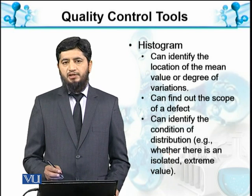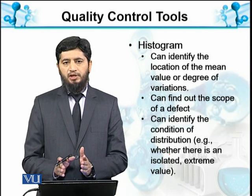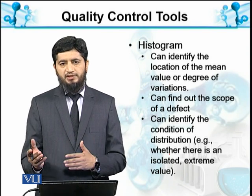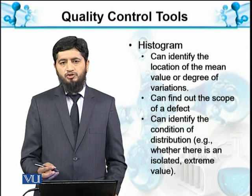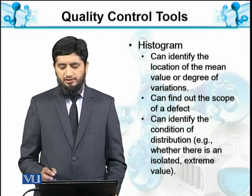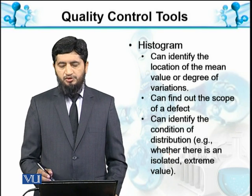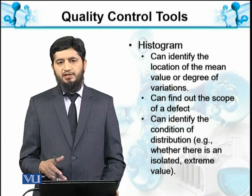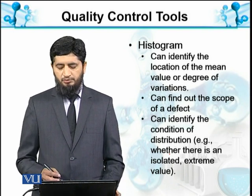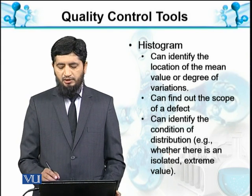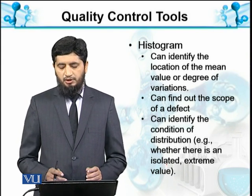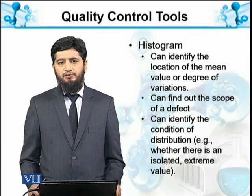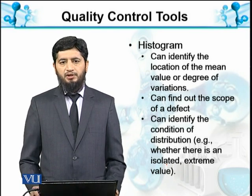Using a histogram, we can identify the location of the mean, whether the distribution is normal or skewed to one side. We can see the degree of variation and position of the data, and find out the scope of defects or number of occurrences. We can also identify the condition of distribution — whether it is an isolated problem or other problems associated with the same parameter.